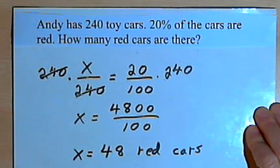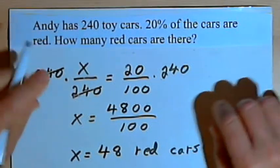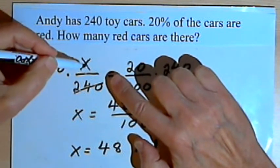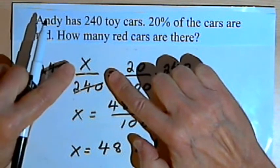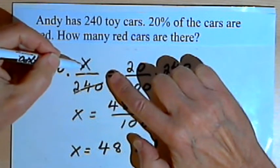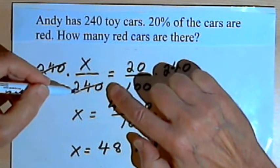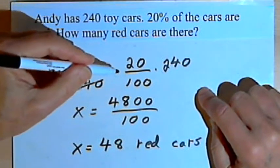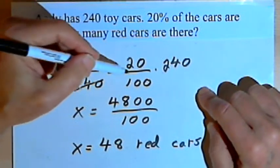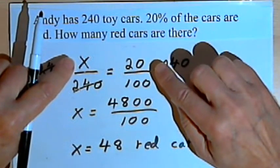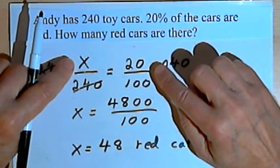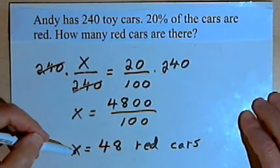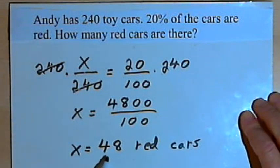So let's just review this. I started out by making a fraction, a ratio. I took the number of red cars as the numerator. We didn't know what that was, so I just used an x for that. The denominator was the total number of cars. I set that equal to the percent that I had, but I wrote the percent as a fraction. So I had x over 240 equals 20 over 100. And then all I had to do was solve that equation to find out what x was, and I got the number of red cars.